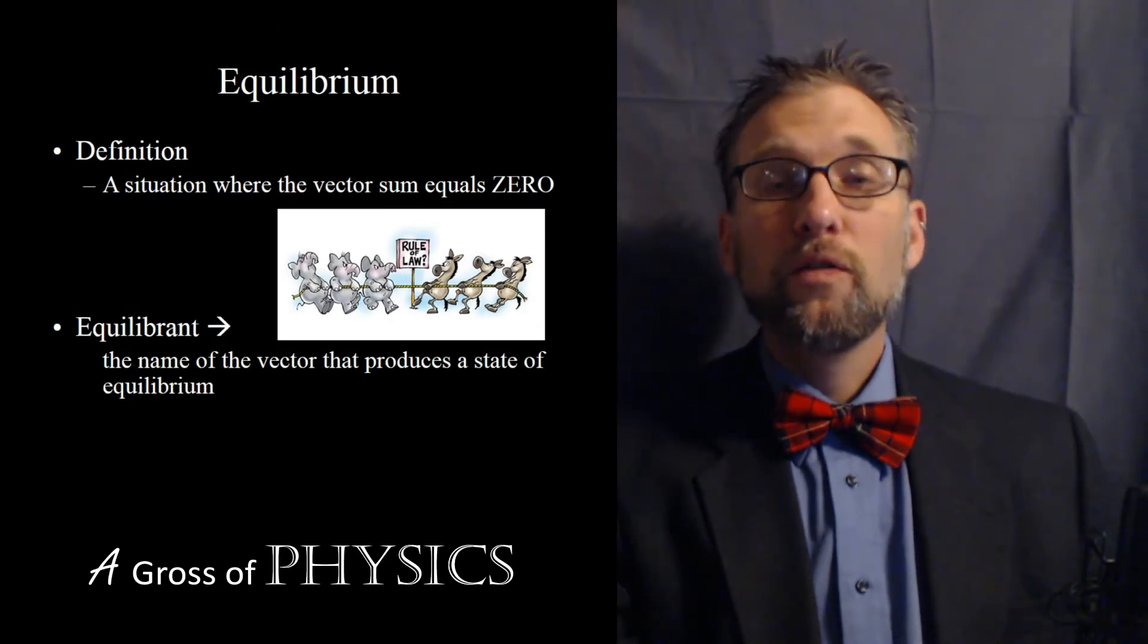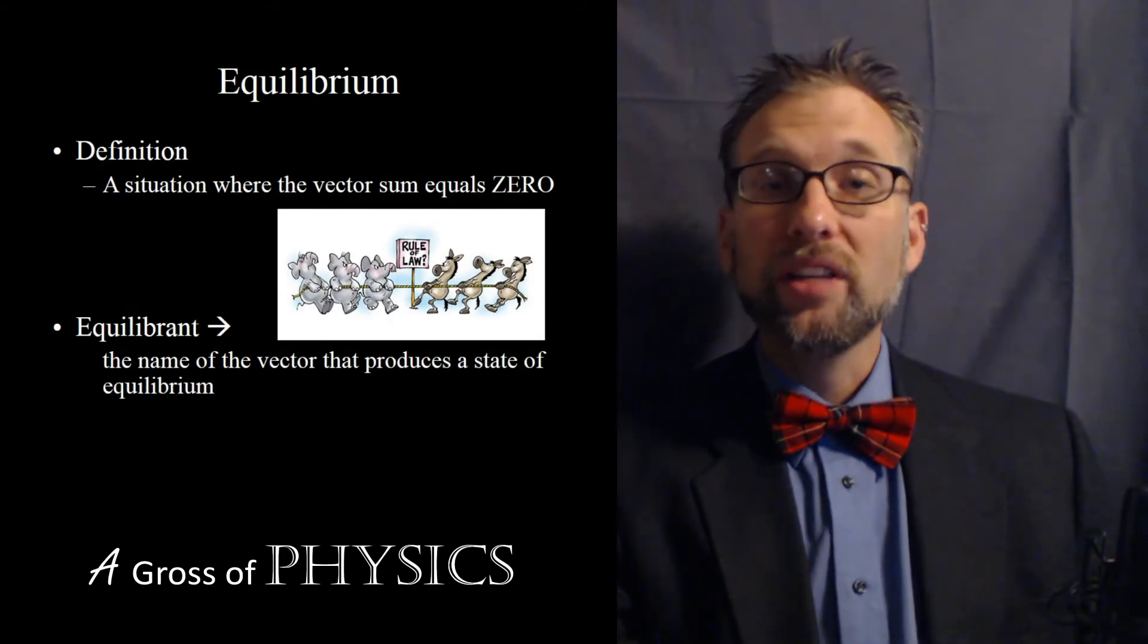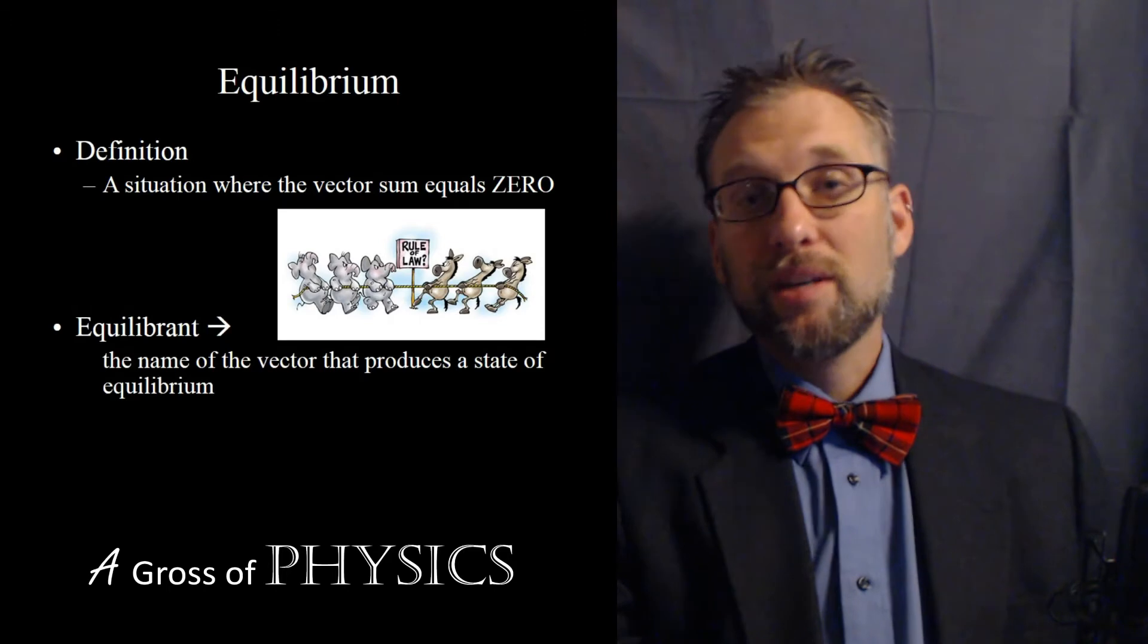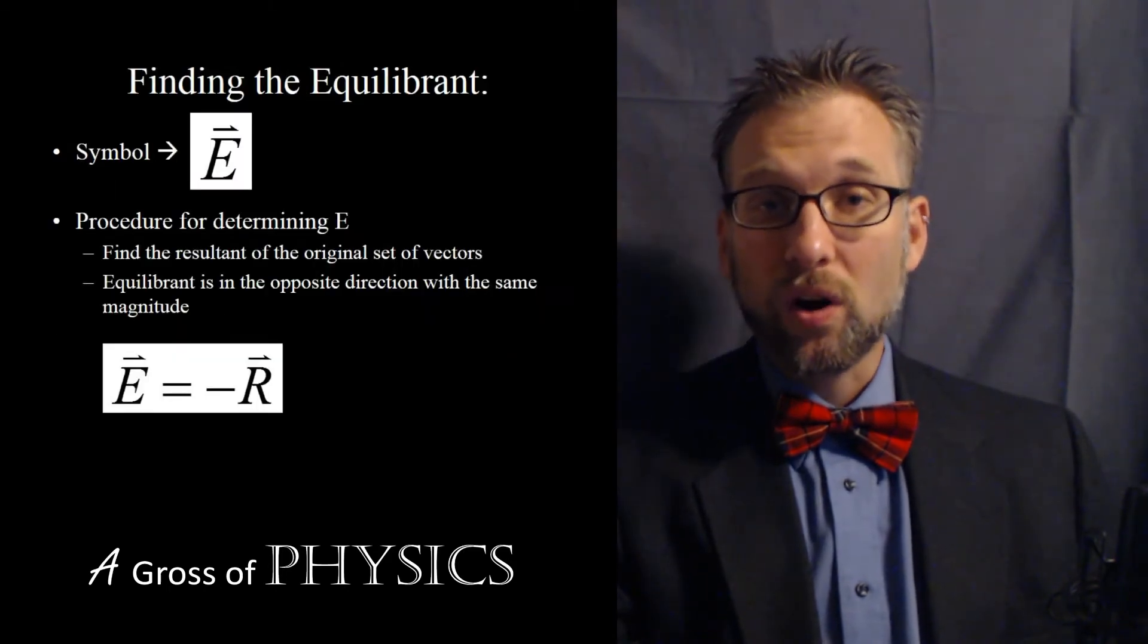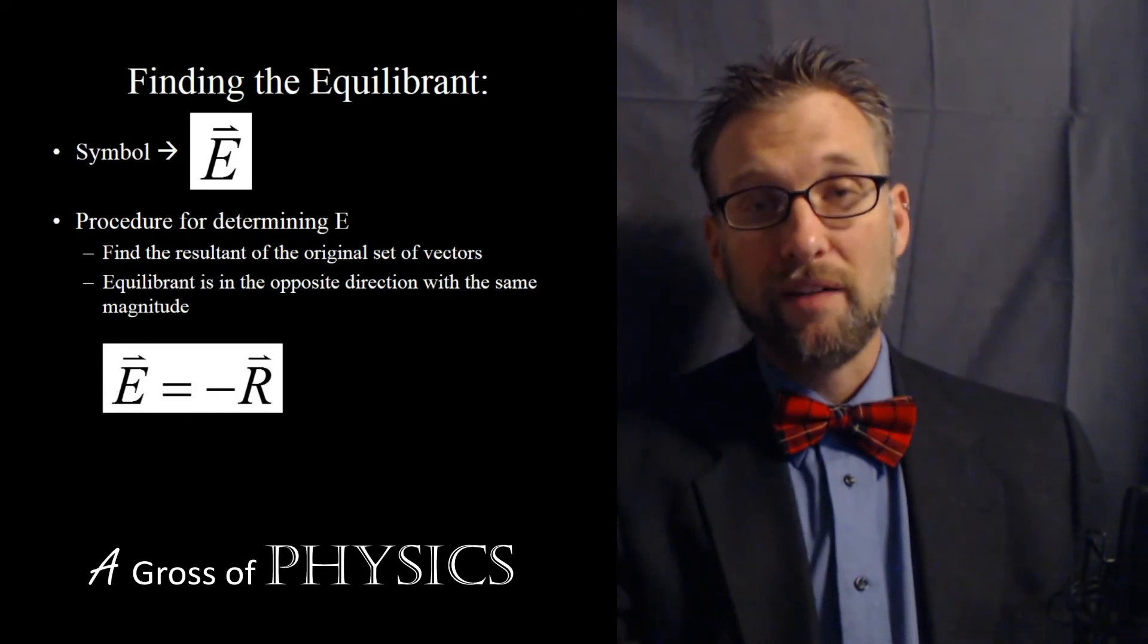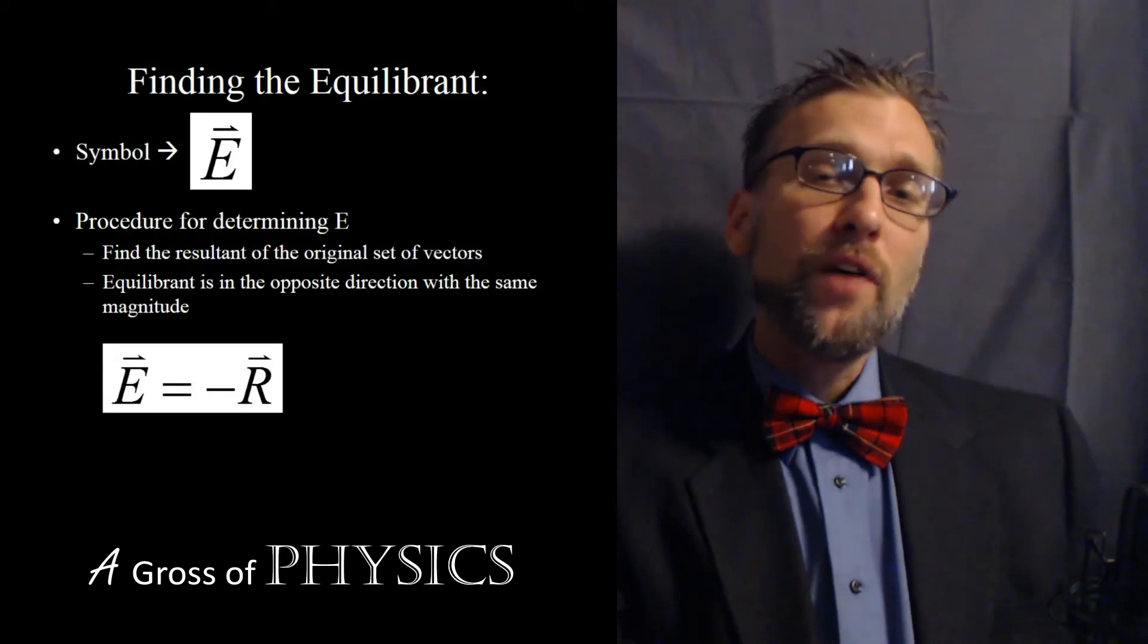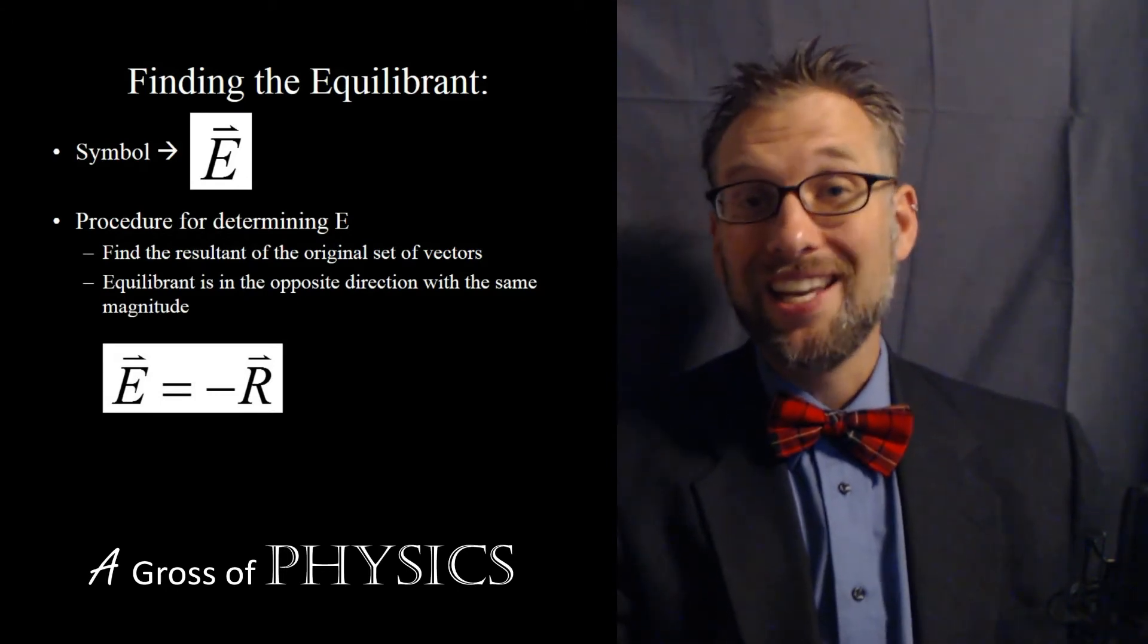The term for the vector that will produce equilibrium is called the equilibrant. And we have a symbol for that. It's an E with the half arrow on top. Remember, the resultant was an R with a half arrow. The equilibrant here is going to be E with the half arrow. Now, if we find the resultant to be, for example, let's say 50 meters east.